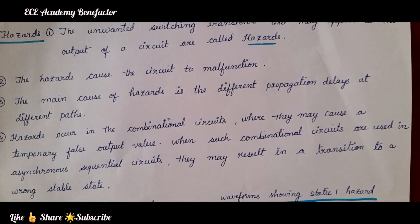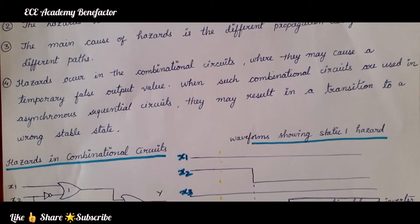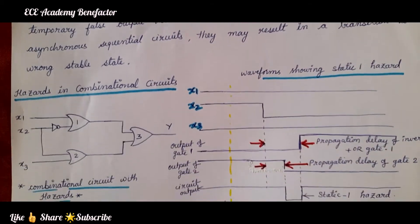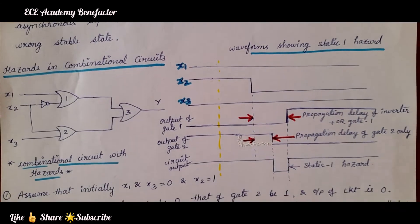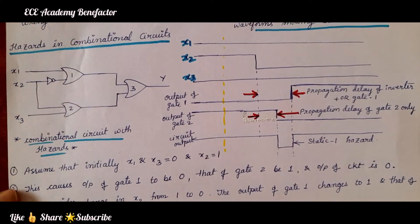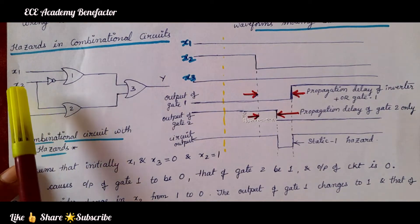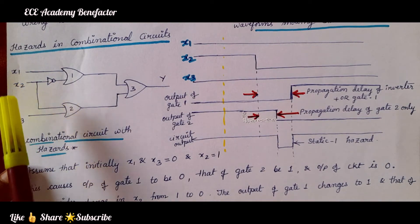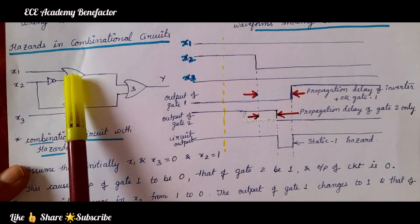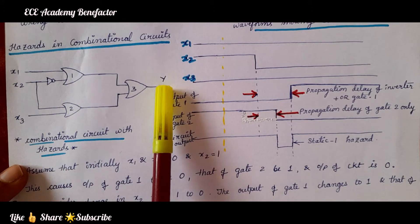Hazards are not desirable, as they occur due to different propagation delays at different paths. Let us understand hazards in a combinational circuit. Here we have taken 3 inputs x1, x2, x3, with gate 1, gate 2, gate 3, and output y.